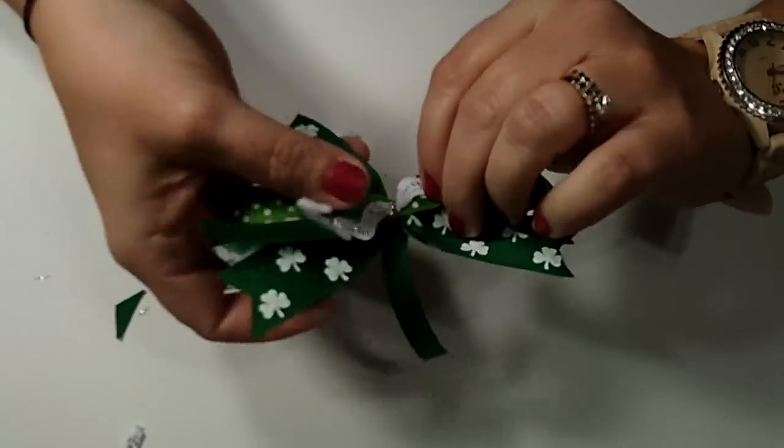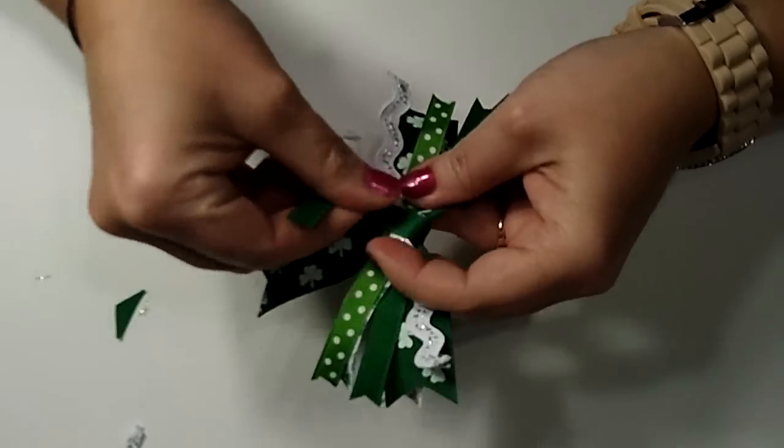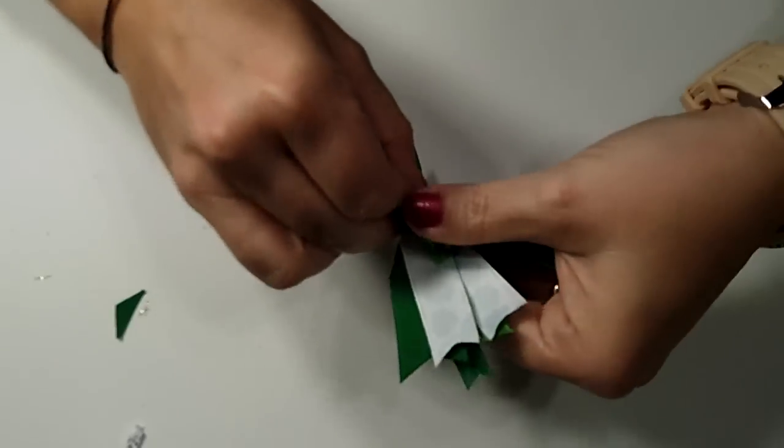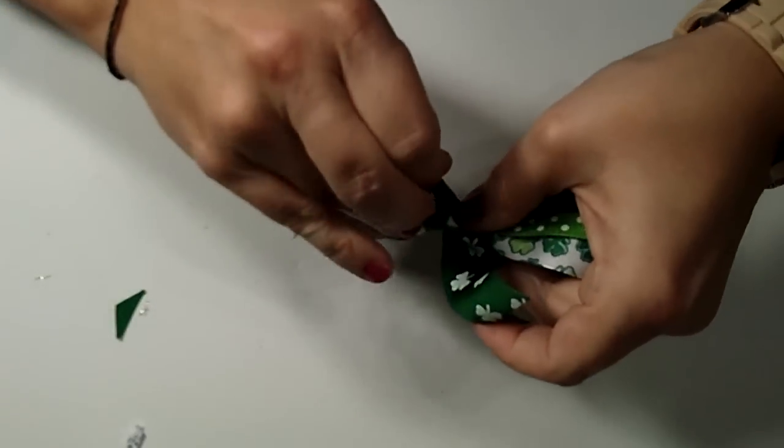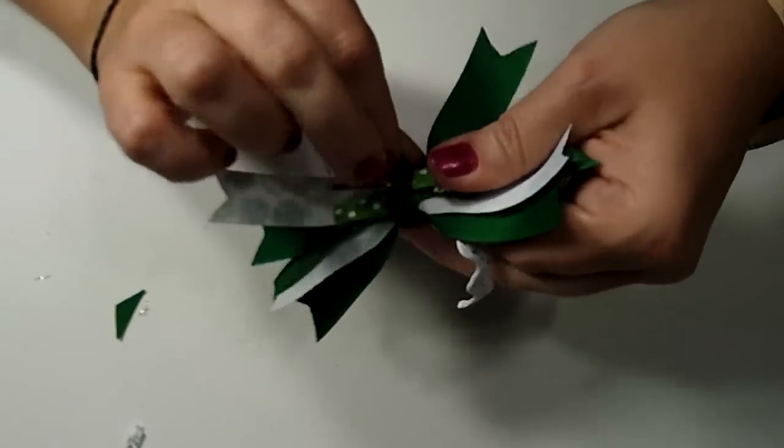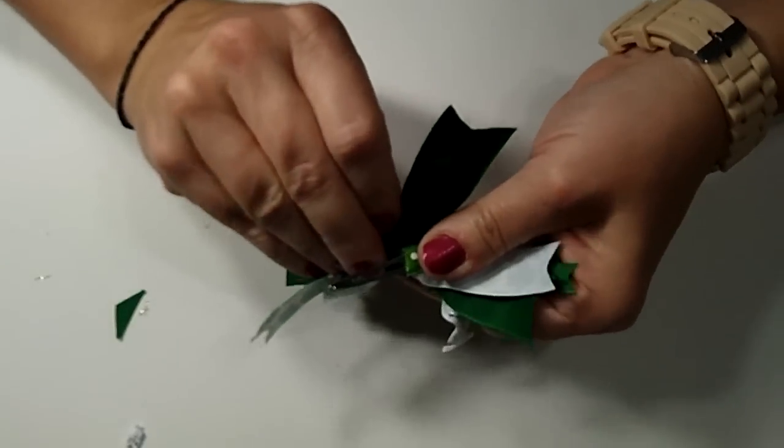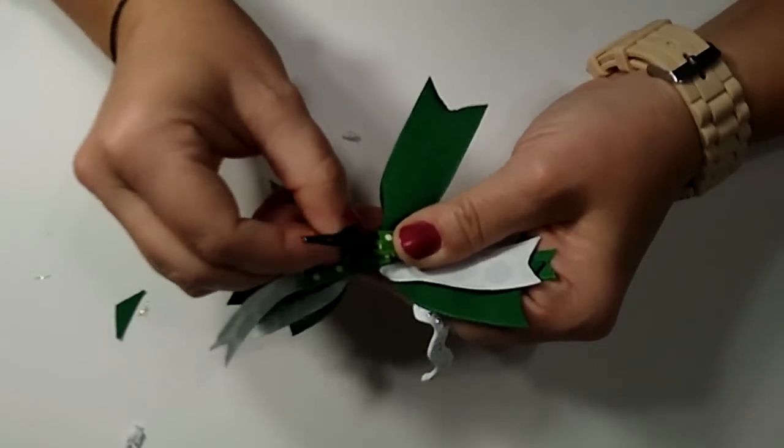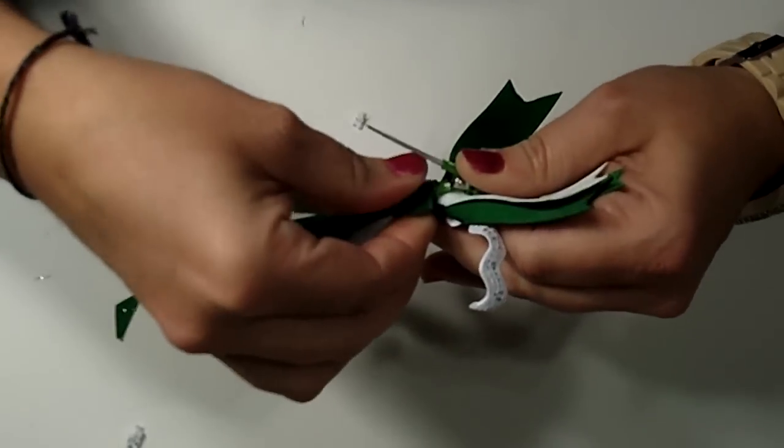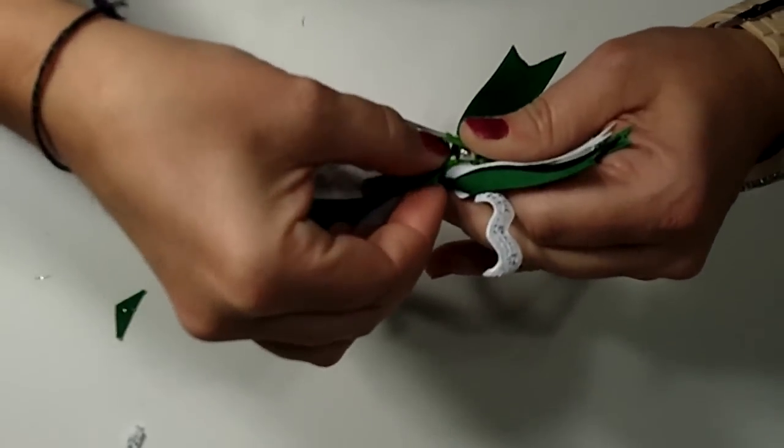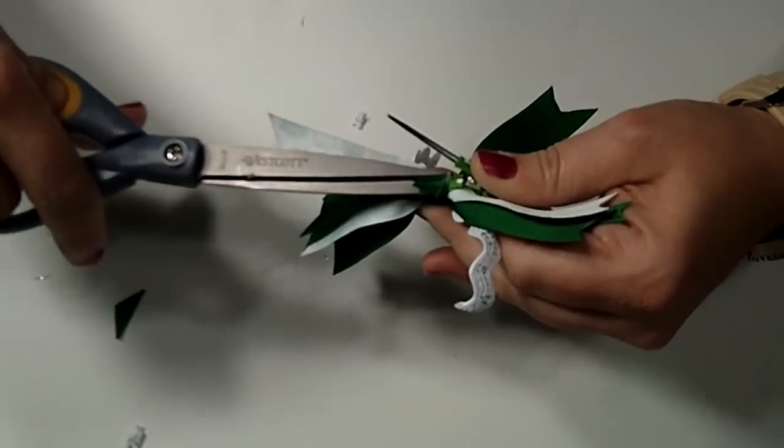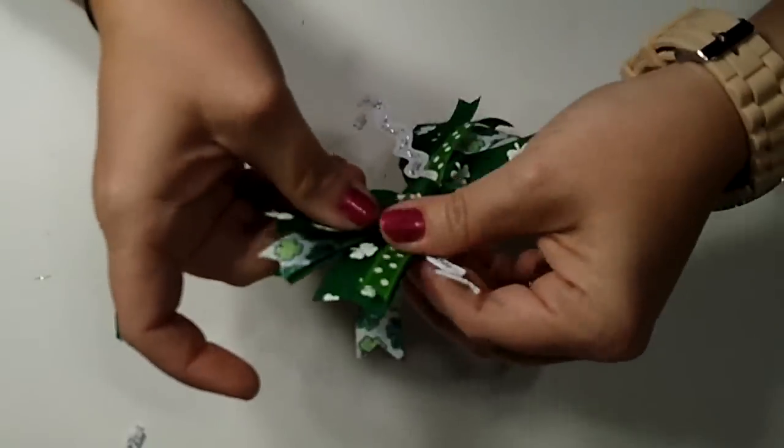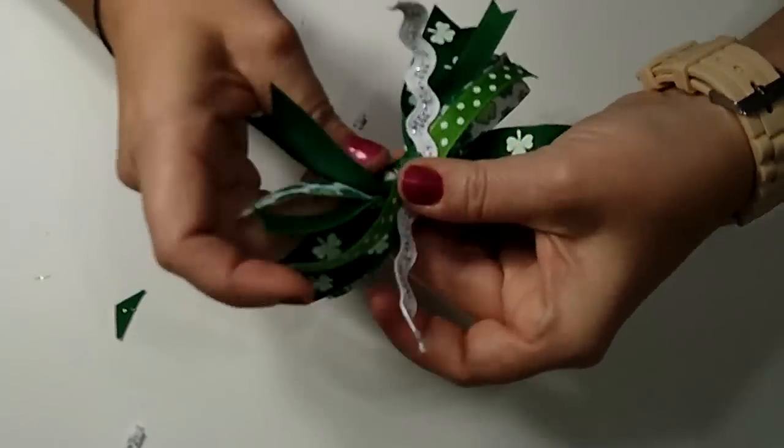Then we're gonna wrap this ribbon around. So we just wrap, get those spikes out of the ribbon, and you can kind of pull it. Then we're just gonna glue that last piece back there. Attach that, cut off our extra, and then when we turn it around we can kind of spread out our spikes again where we want.